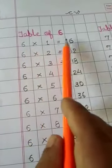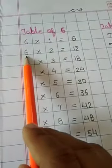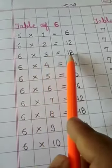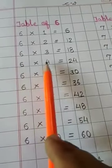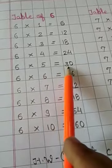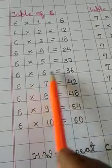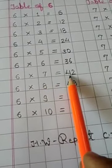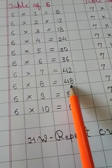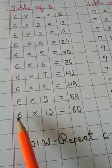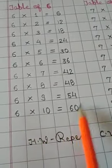So, 6, 1's are 6. 6, 2's are 12. 6, 3's are 18. 6, 4's are 24. 6, 5's are 30. 6, 6's are 36. 6, 7's are 42. 6, 8's are 48. 6, 9's are 54. And 6, 10's are 60.